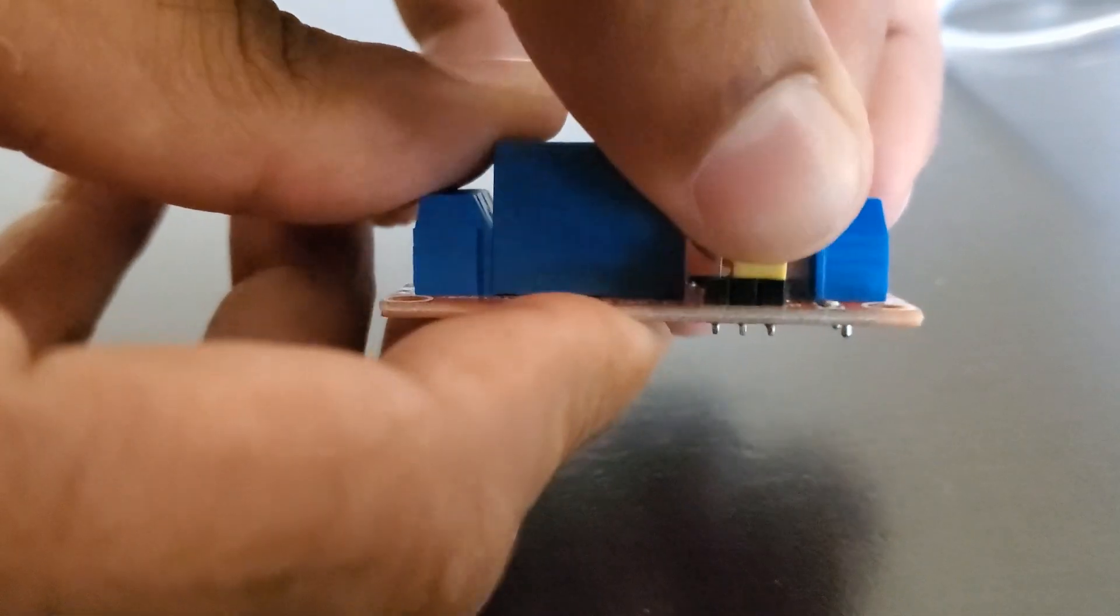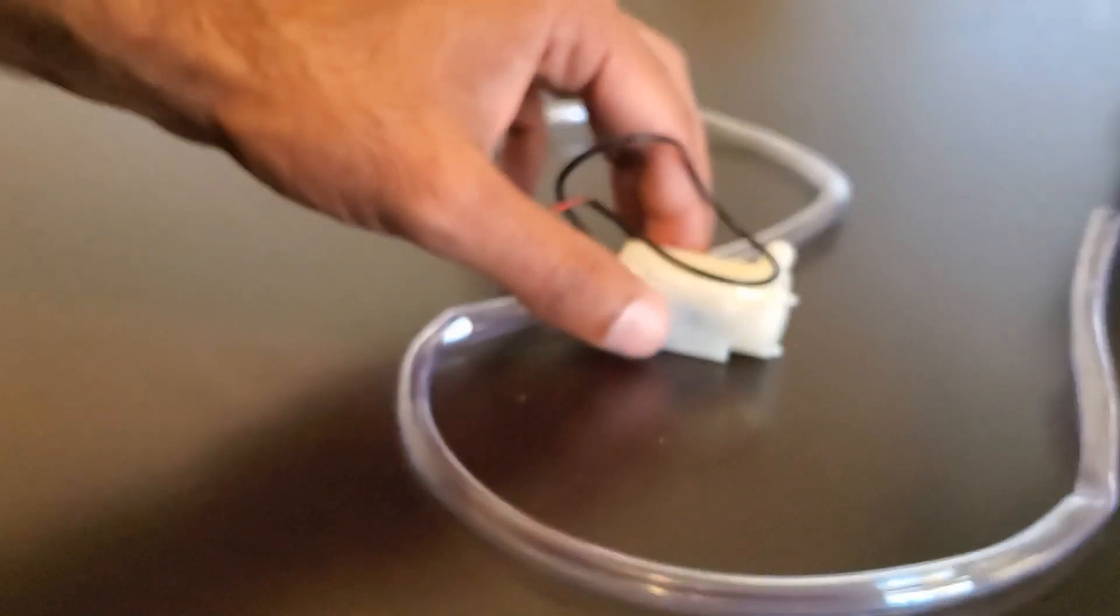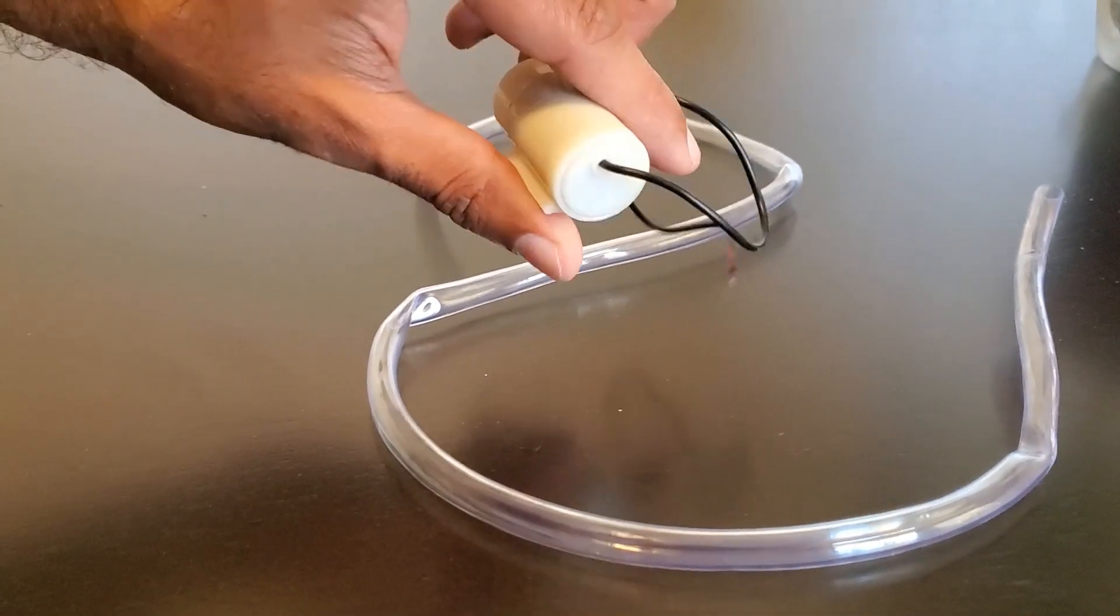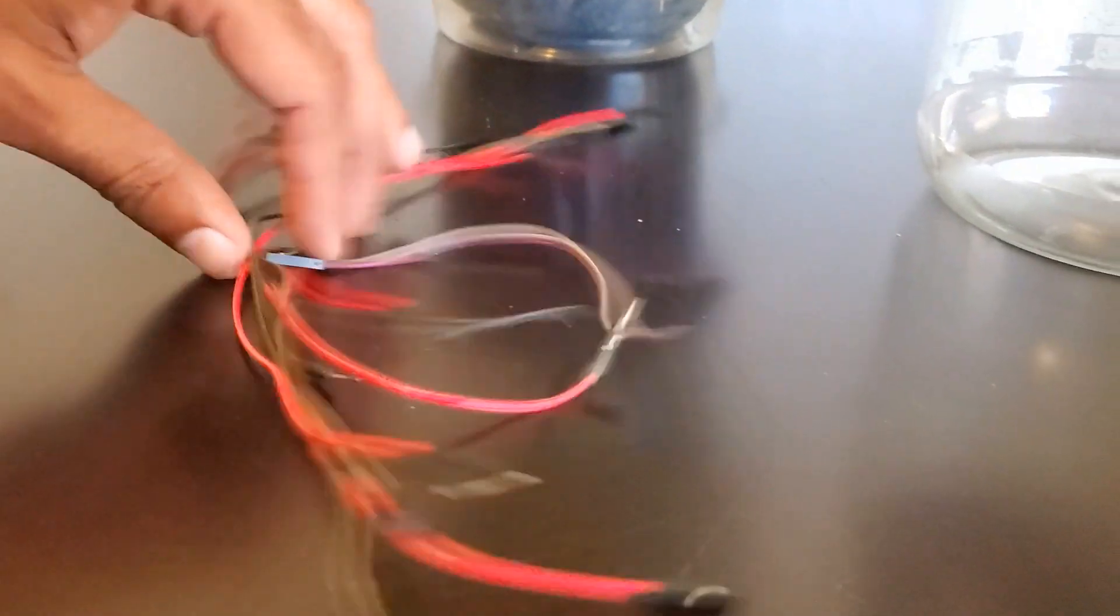To do this, just pull up the jumper and make sure it's clipped on to the side closest to the H, meaning high. You'll need a 5 volt DC pump with some tubing.